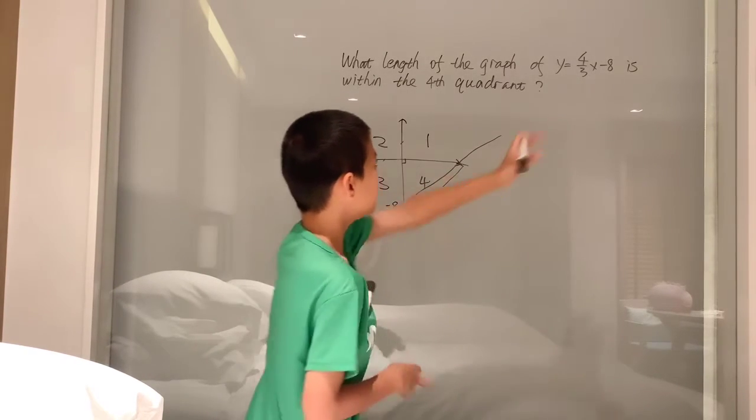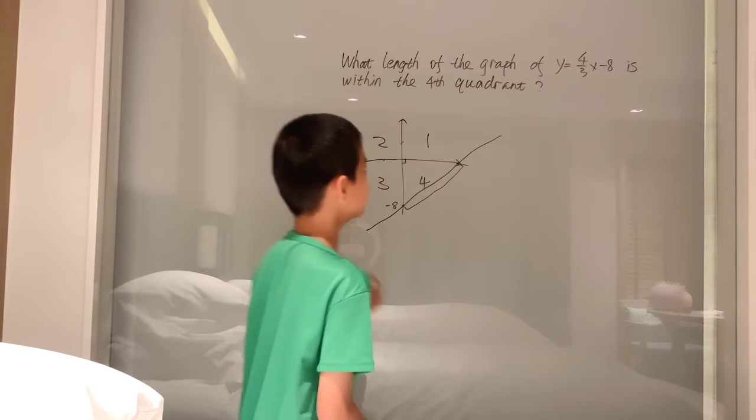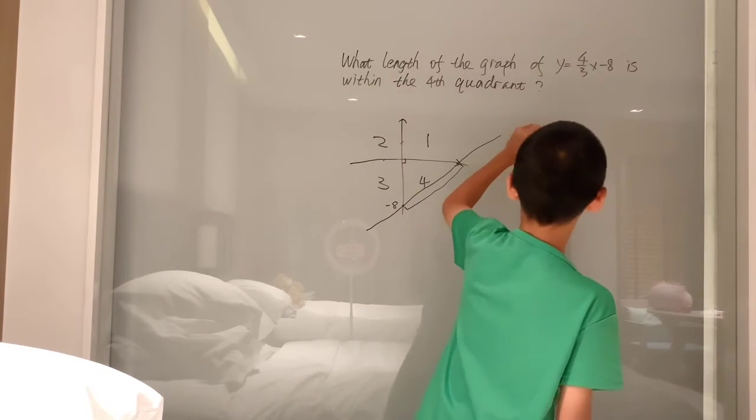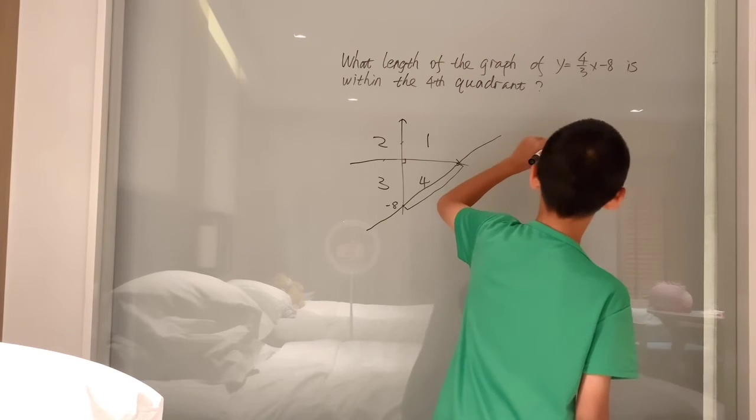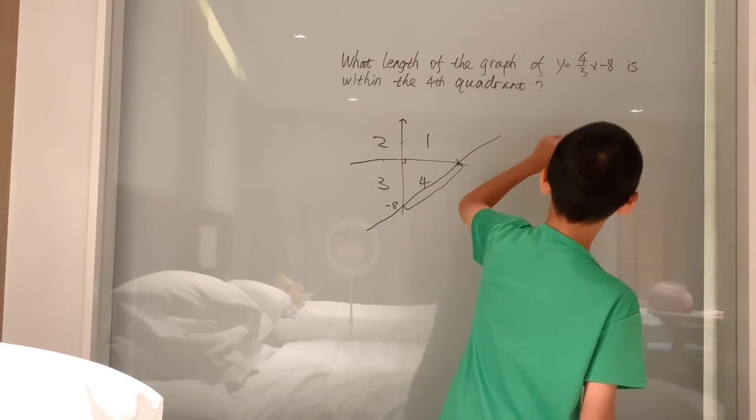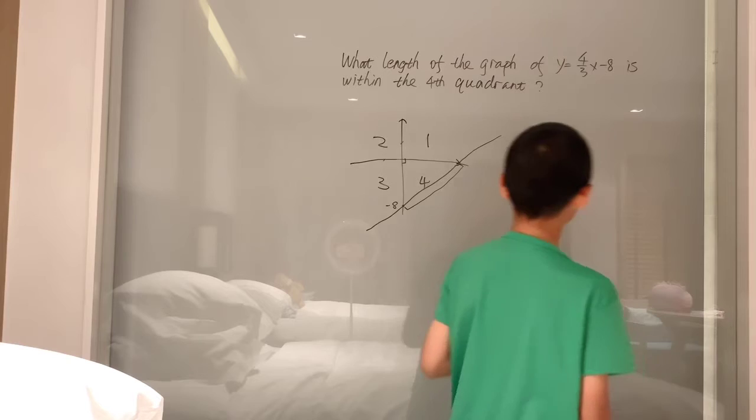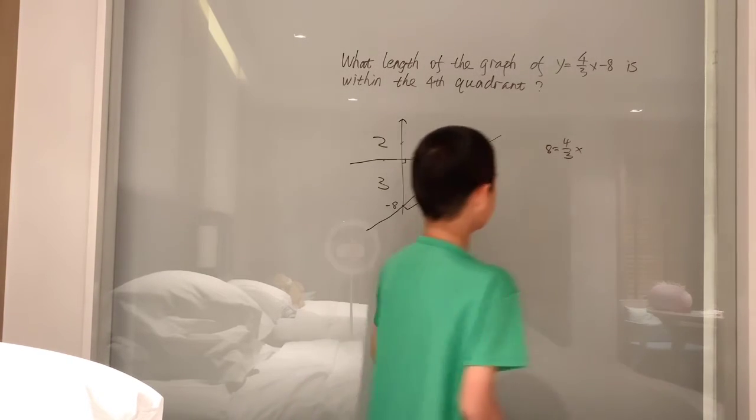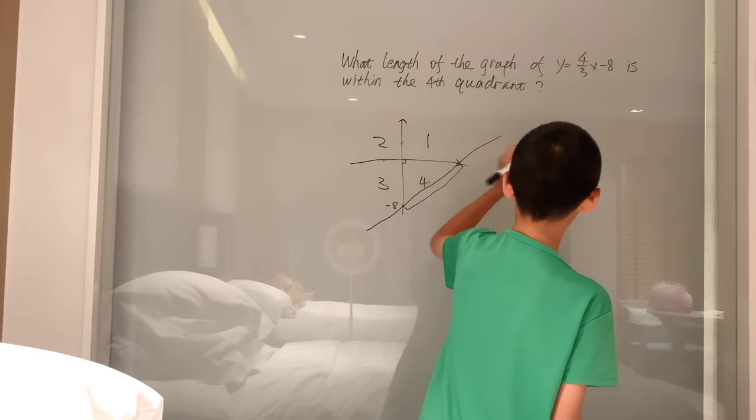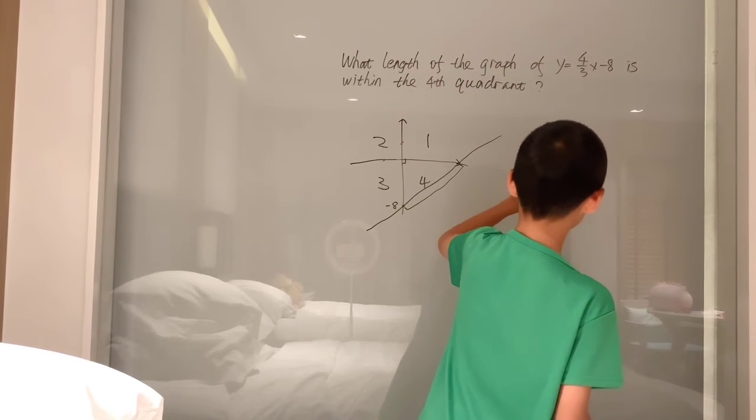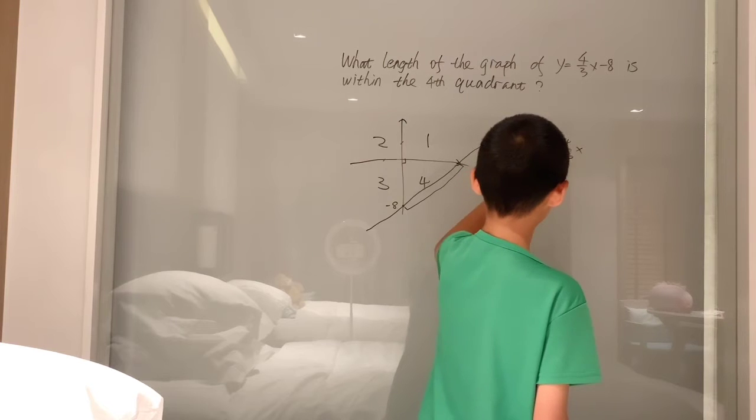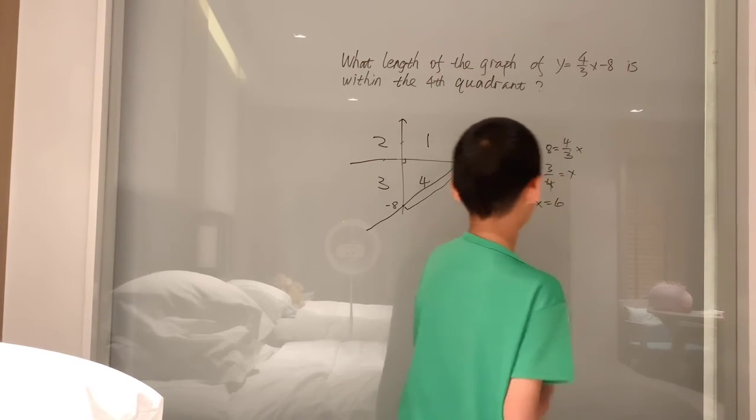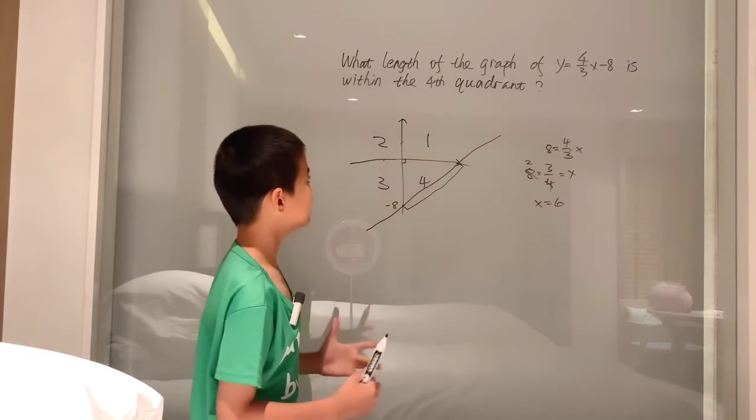And the x-intercept, basically the same thing. I can set y to 0, setting y to 0, and move over the negative 8, which is adding 8. So, we get 8 equals 4 thirds x, and dividing by 4 thirds, or multiplying by 3 quarters, in other words, we get 8 times 3 quarters, cancel, cancel, and get 2 times 3, which is 6, and we get x is 6.